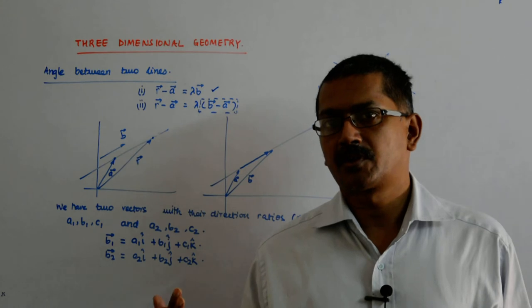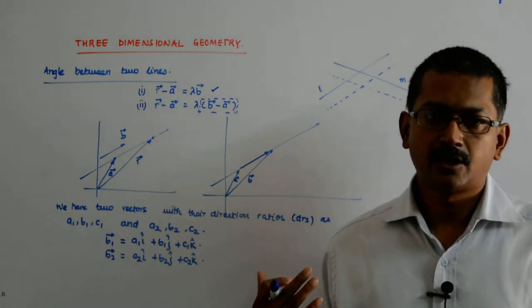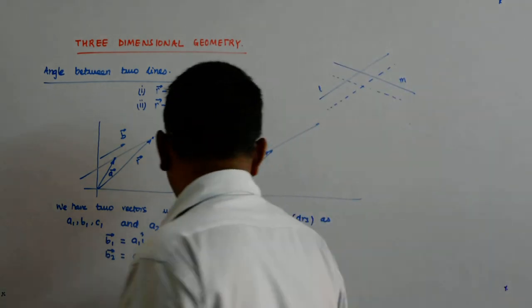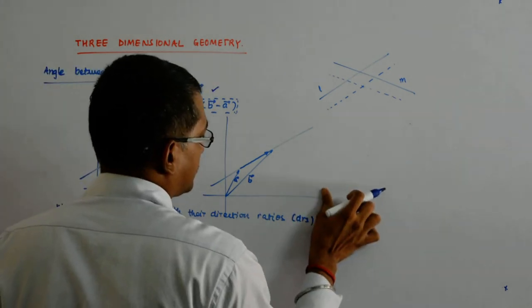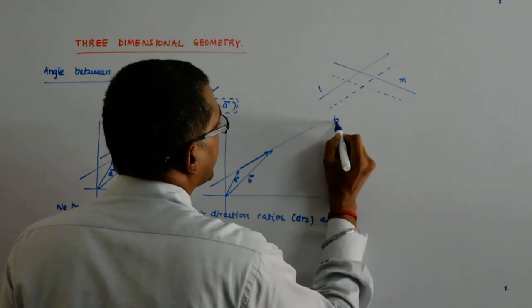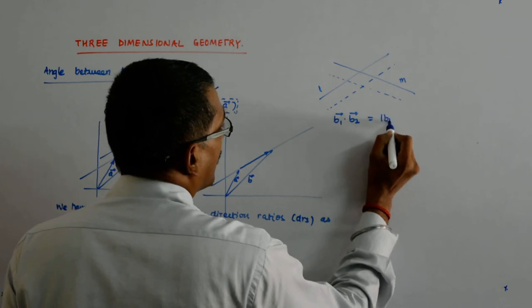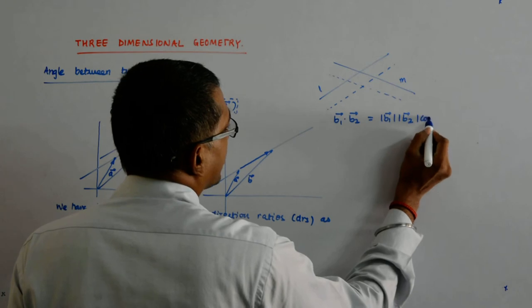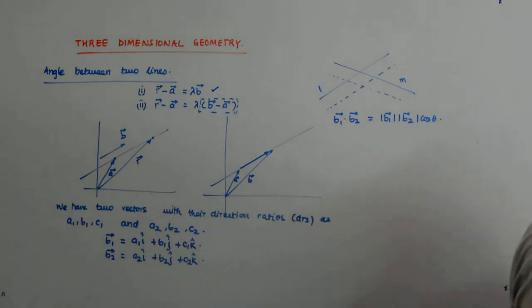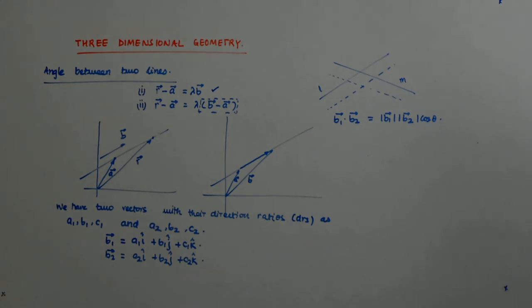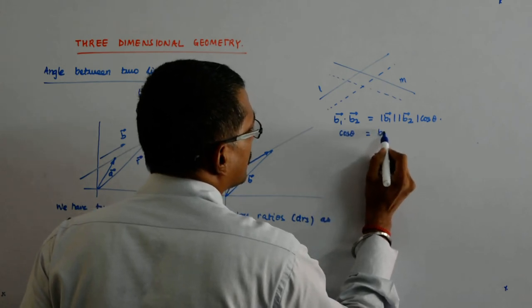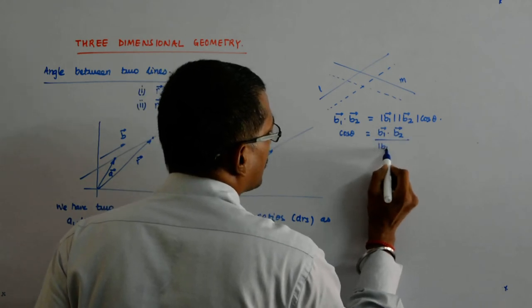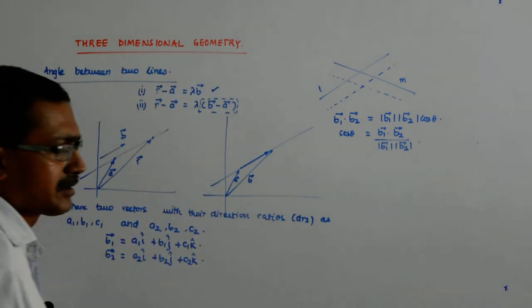When we studied the dot product, we said that the dot product helps us find the angle between vectors. What is b1 dot b2? It is mod b1 times mod b2 times cos theta. That gives us cos theta equal to b1 dot b2 upon mod b1 mod b2.